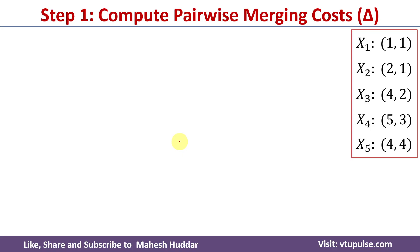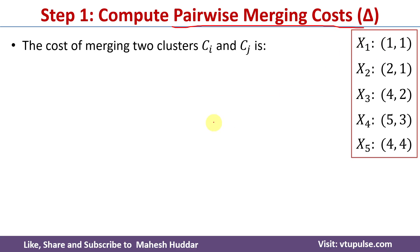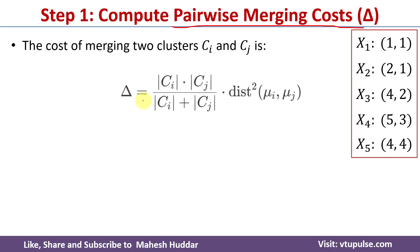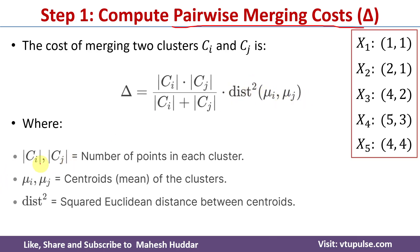In the first step of Ward's clustering algorithm we need to compute the pairwise merging cost, that is delta. The pairwise merging cost of two clusters Ci and Cj can be calculated using this formula: delta equals cardinality of Ci times cardinality of Cj, divided by cardinality of Ci plus cardinality of Cj, multiplied by the squared distance between centroids mui and muj. The distance squared means we first find the Euclidean distance and then square it.